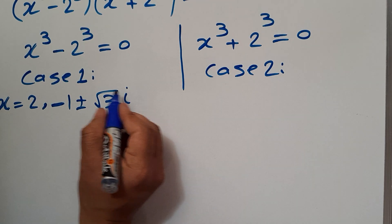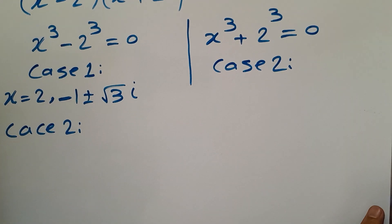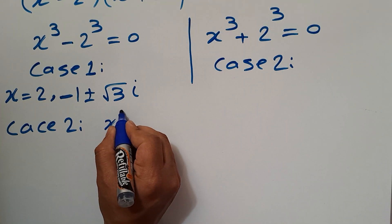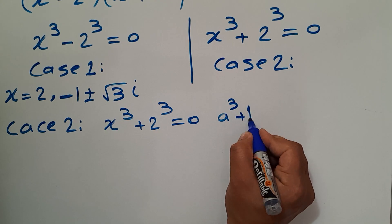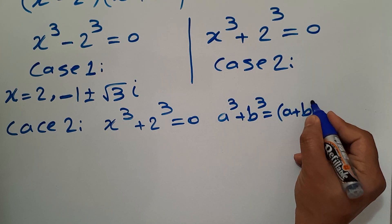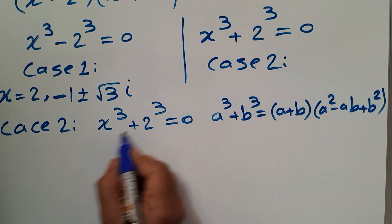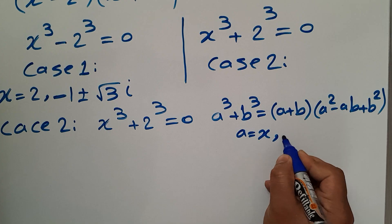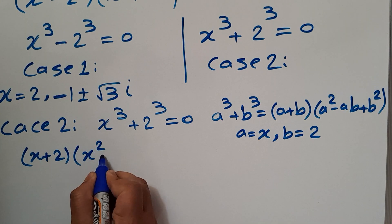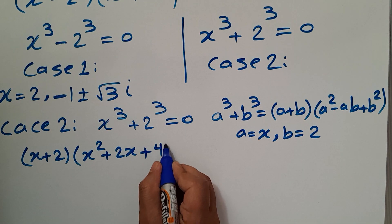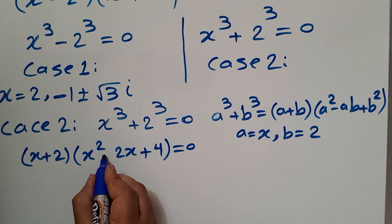Now case number 2: x cubed plus 2 cubed equals 0. As we know, a cubed plus b cubed equals (a plus b) times (a squared minus ab plus b squared). Here a is x and b is 2, so we have (x plus 2) times (x squared minus 2x plus 4) equals 0.